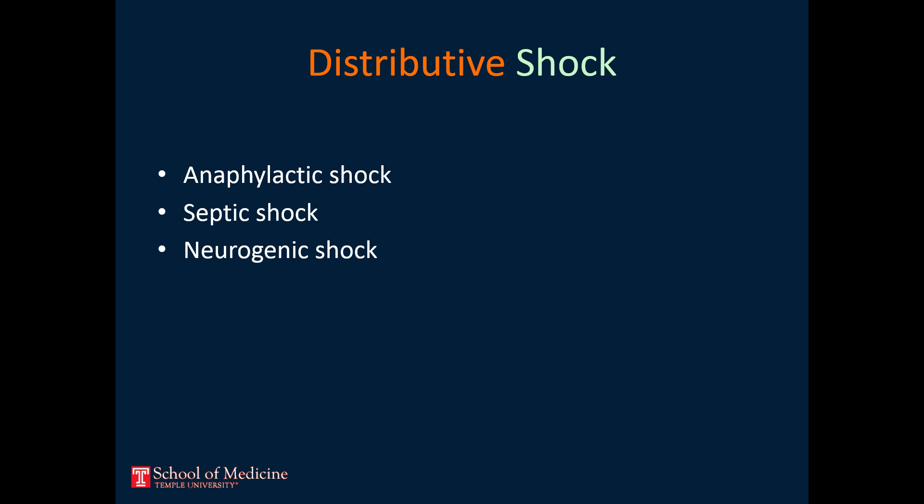The second cause of distributive shock is sepsis. In septic shock, an infection triggers an exaggerated systemic inflammatory response. Cytokines and interleukins interact to decrease systemic vascular resistance. The third cause of distributive shock is neurogenic. This occurs when there is a spinal cord injury, typically above the T5 level, that severs sympathetic nerves and results in a loss of systemic vascular resistance.